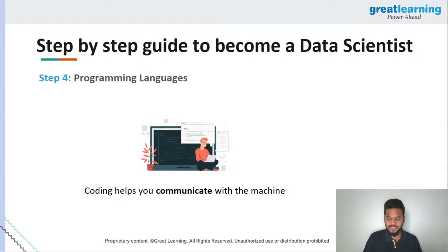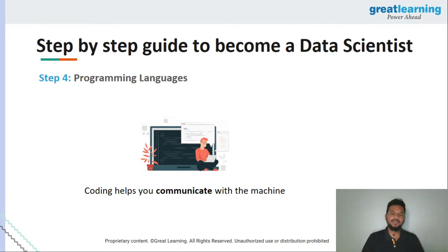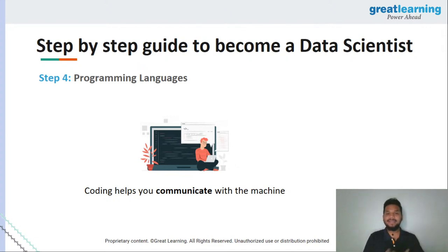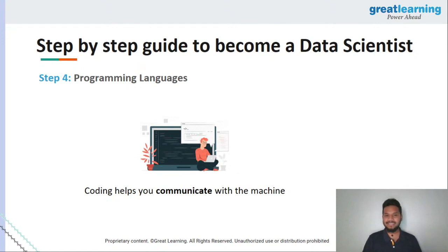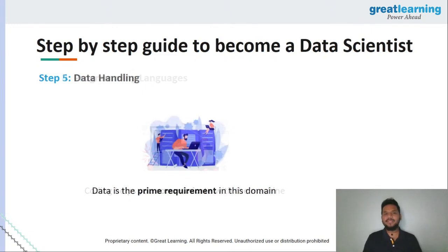What is the difference between data analytics and data science? Data analytics talks about using data from the past and present to try to predict the future. But data science covers everything: creation of data, storage of data, cleaning the data, using the data, and eventually making sure you solve the problem with the data. That is very different from what a data analyst does.